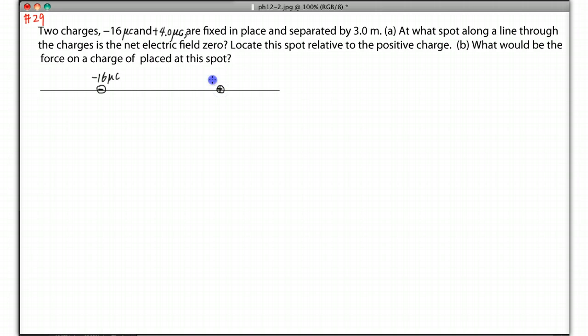The question is asking: at what spot along the line through the charges is the net electric field zero? So this is a line that just drew along the two charges.